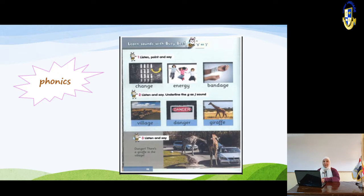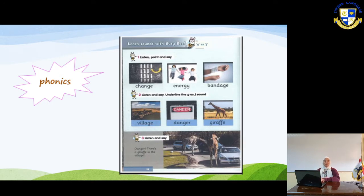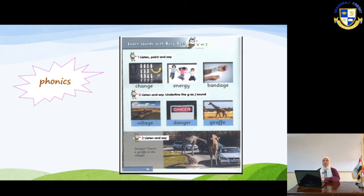Our phonics today is quite interesting — we've covered it many times. This is about the JH sound. The letter G has two sounds: G and JH. The G sound appears in words like goat, girl, grapes, and gate. But the JH sound appears in other words. You can see three pictures on page 98 — open your book and follow along.